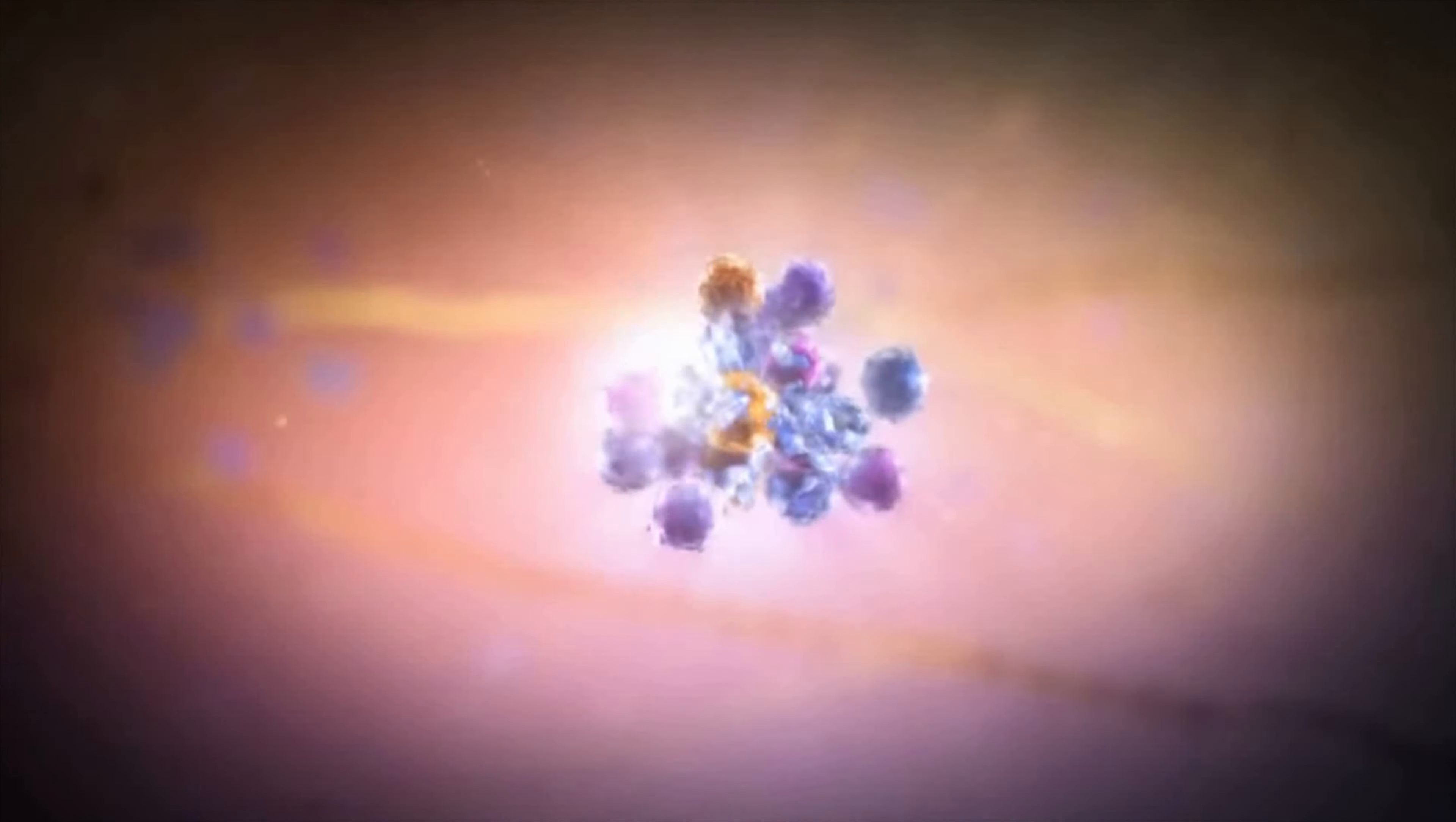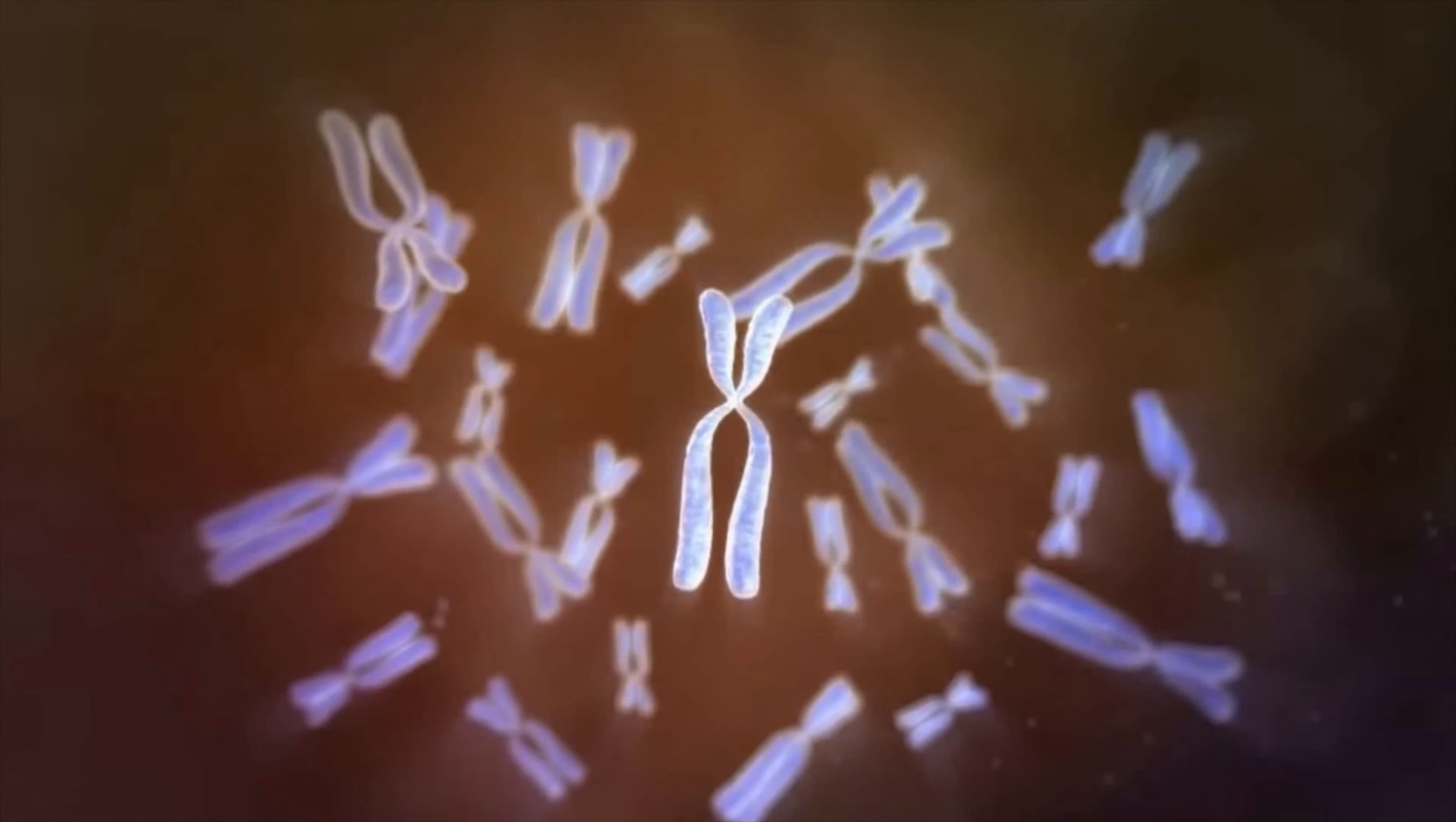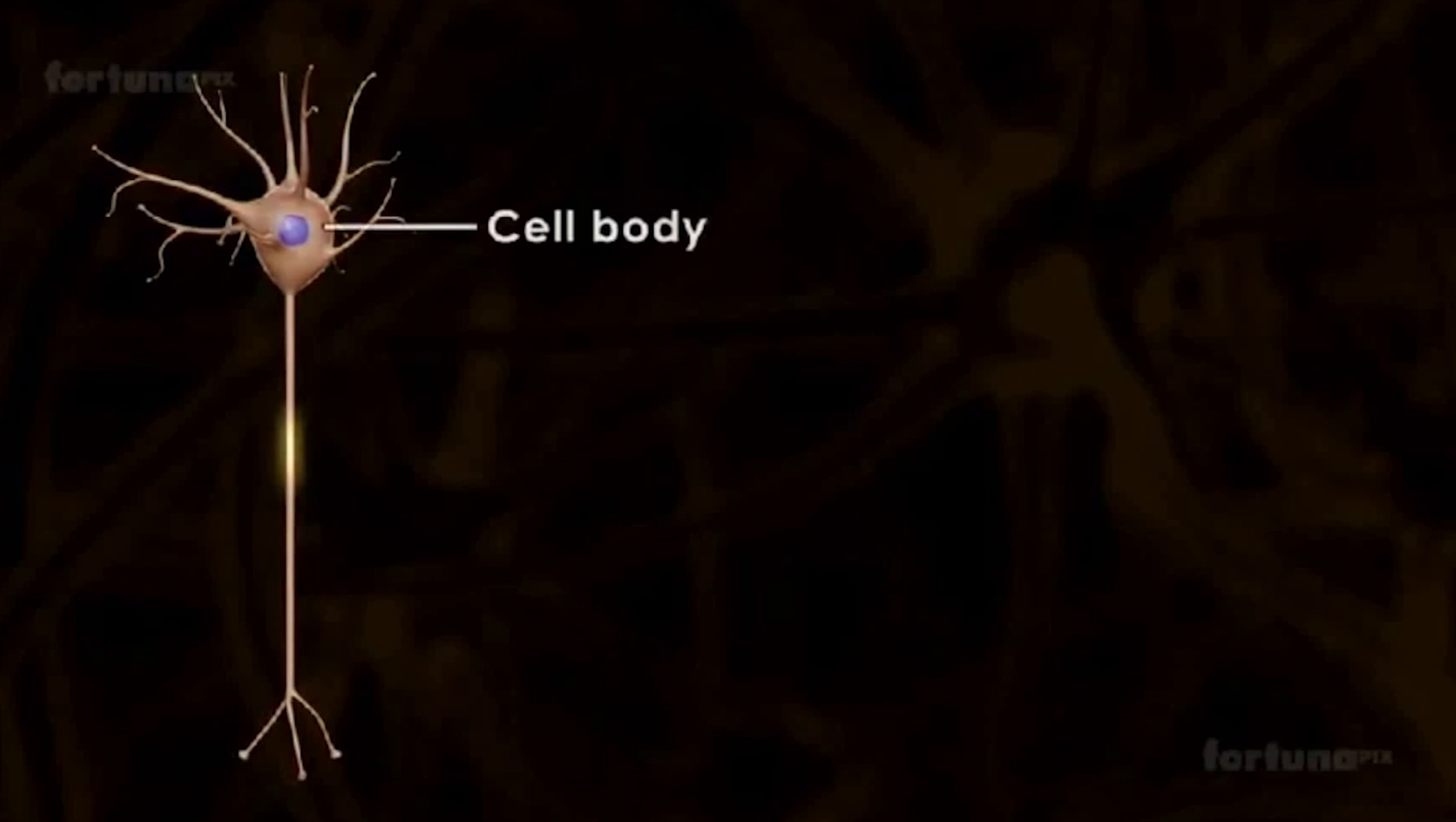The peripheral nervous system includes the autonomic and somatic nervous systems. In vertebrates, the majority of neurons belong to the central nervous system, but some reside in peripheral ganglia, and many sensory neurons are situated in sensory organs such as the retina and cochlea.